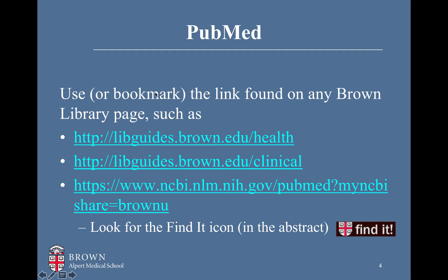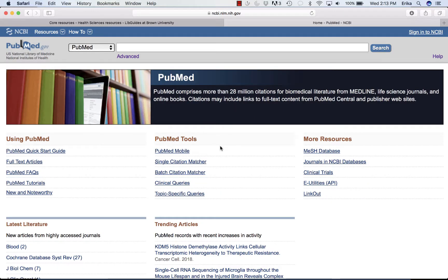Moving on to PubMed. When you want to search PubMed and you're going to be looking to retrieve full text right away, you should use or bookmark the link found on any Brown University library page, such as if you search for it as a best bet or follow the link from one of these pages. You can also bookmark the link that contains the code for Brown University within the URL. That code tells PubMed that you should be seeing the Find It icon in any article that you retrieve.